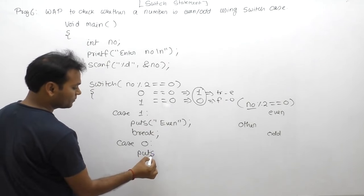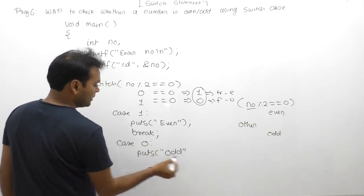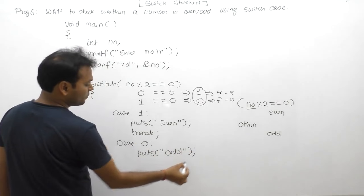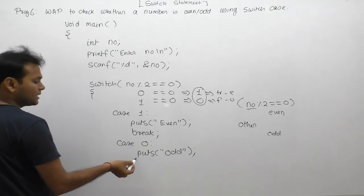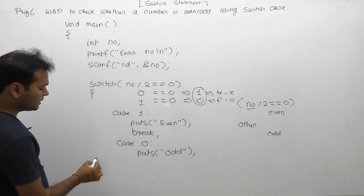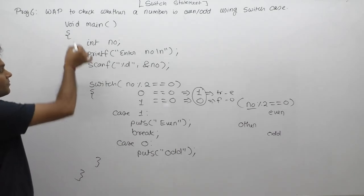These cases can be interchanged - you can write case 0 first or case 1 first, it doesn't matter. Then finally, close the switch statement and close the main function.